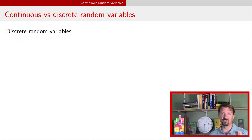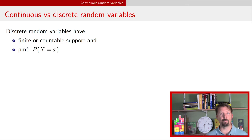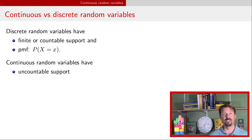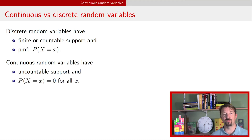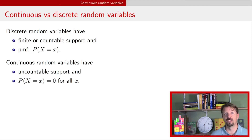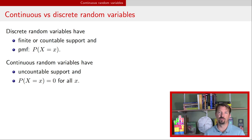I first want to remind you that discrete random variables have a finite or countable support, and they also have a probability mass function that describes the probability that the random variable is equal to a particular value. In contrast, continuous random variables have an uncountably infinite support. And perhaps weirdly, the probability for a continuous random variable to be equal to any particular value is equal to zero. This is related to the fact that there are an uncountably infinite number of possible values, so we can't mathematically have probabilities for individual values. But continuous random variables can still take on values — we just have to treat it mathematically slightly differently.